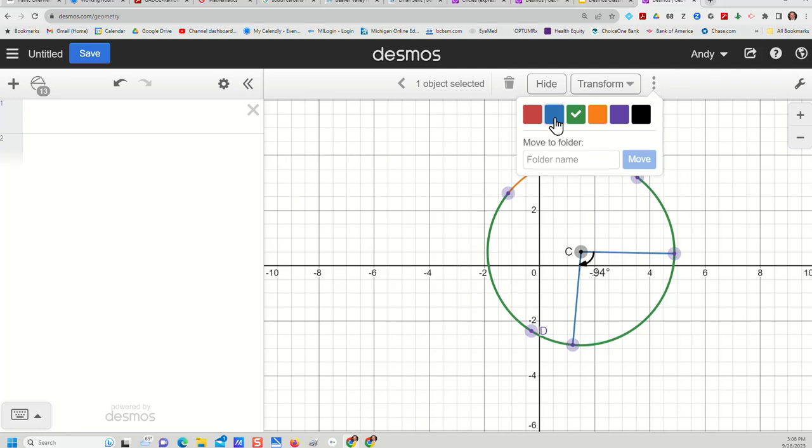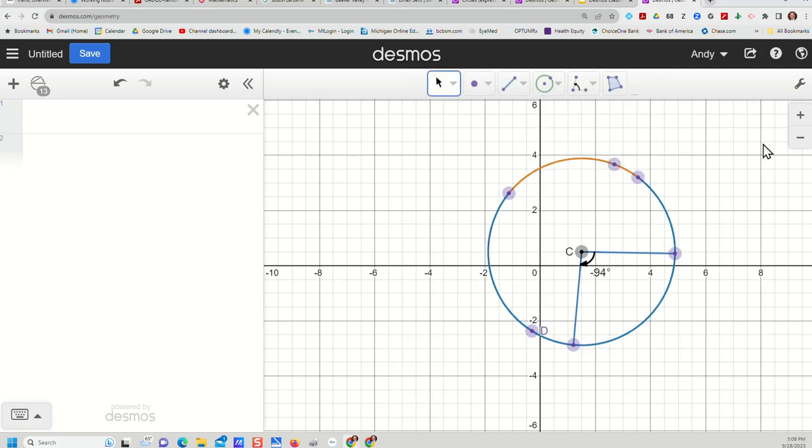And so there we can talk to kids about the minor arc in orange and the major arc in blue, making up the entire circumference of the circle, those types of things. So that's a nice tool to be able to have and lengthening this minor arc, shortens the major arc, all those types of conversations we can have with kids.